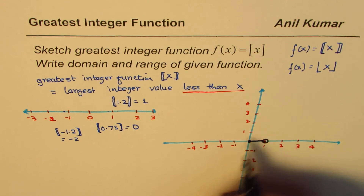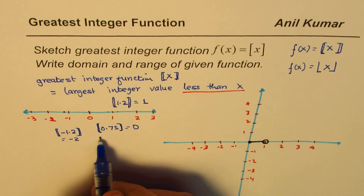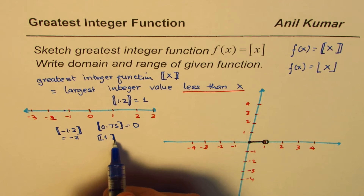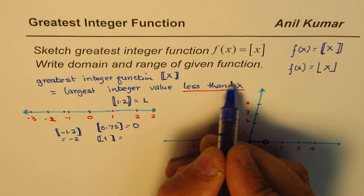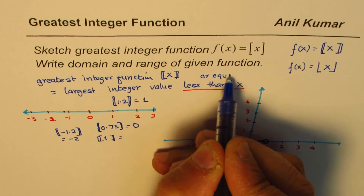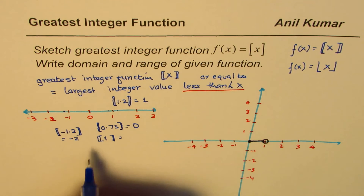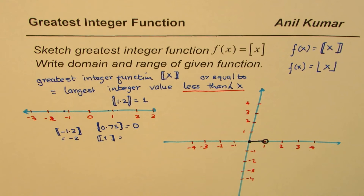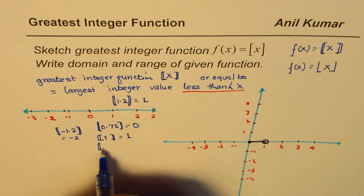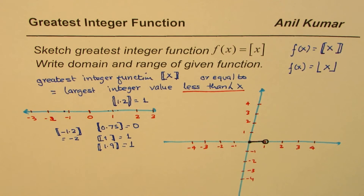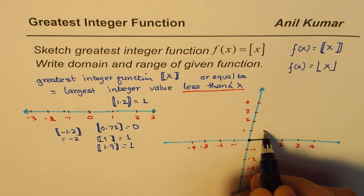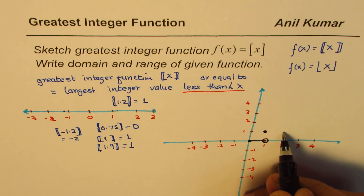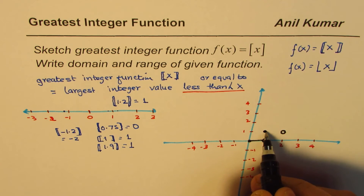As soon as we write 1 — what is the greatest integer value of 1? The largest integer less than or equal to x, so it is 1. And if I take 1.9, that value is still 1. So for any real number in the interval from 1 to 2, the value is 1, and at 2 it moves to 2. This point is an open circle and that is a closed circle.